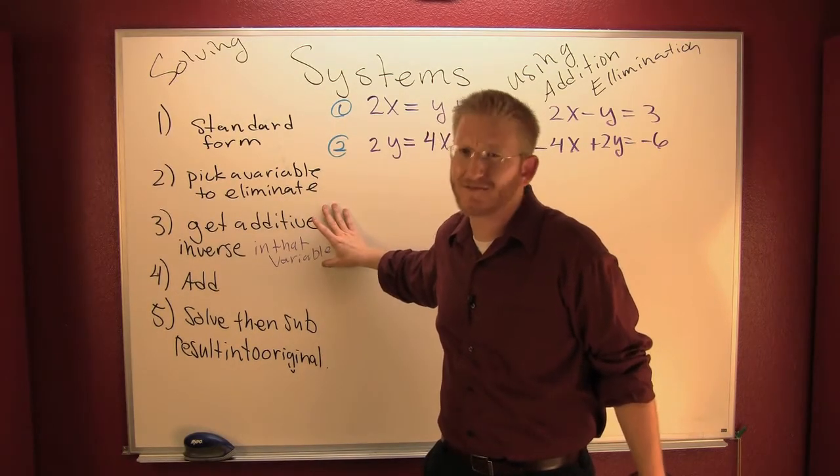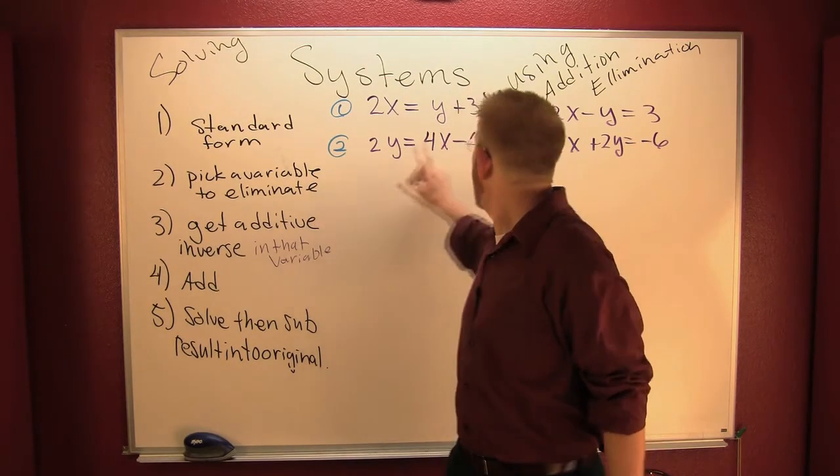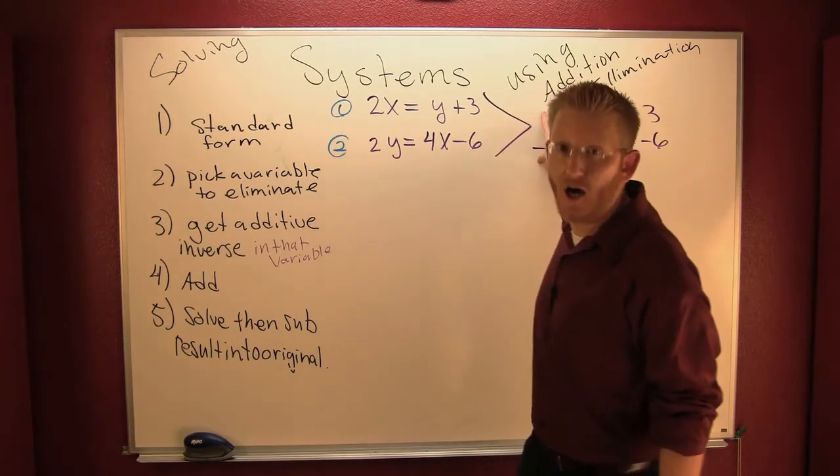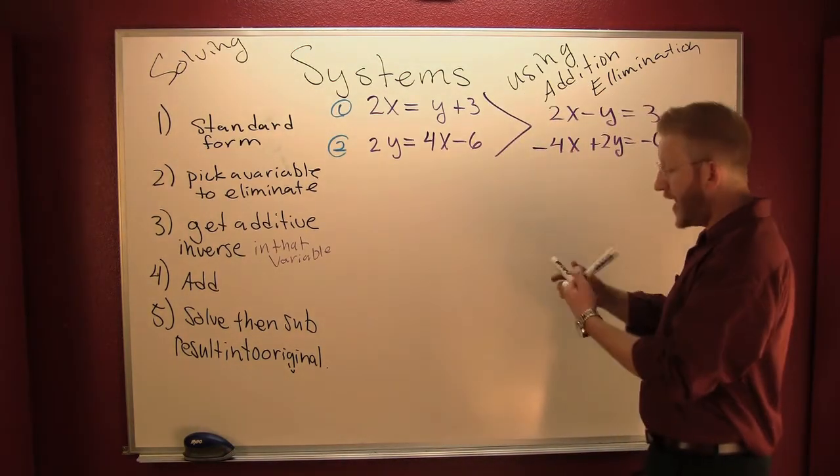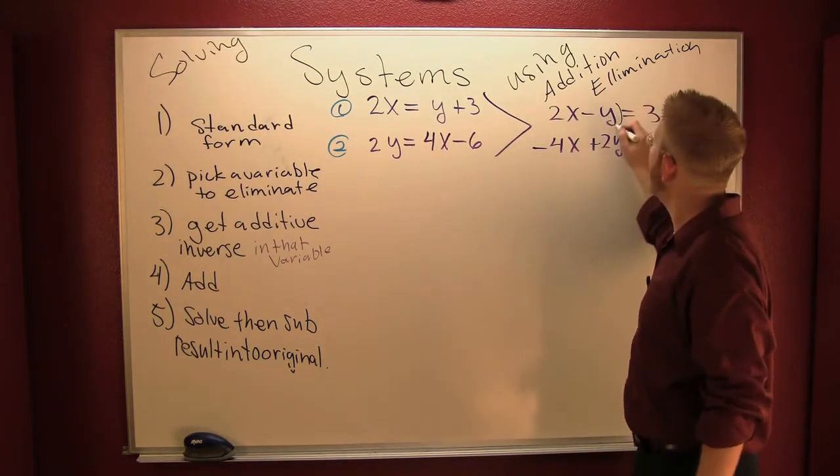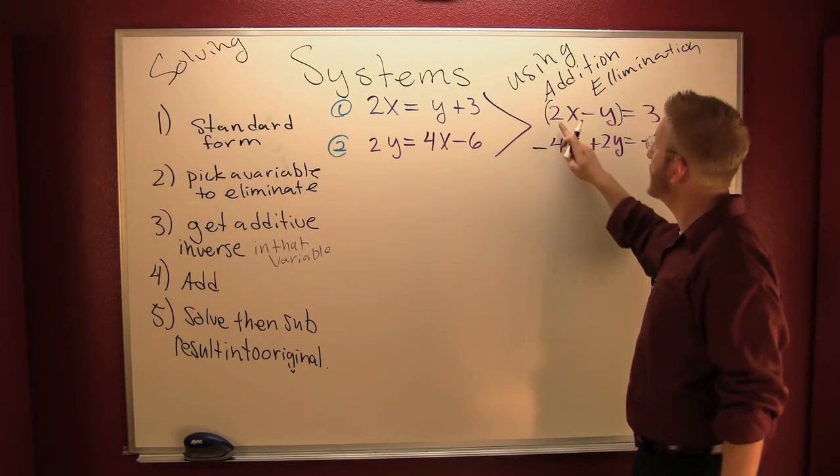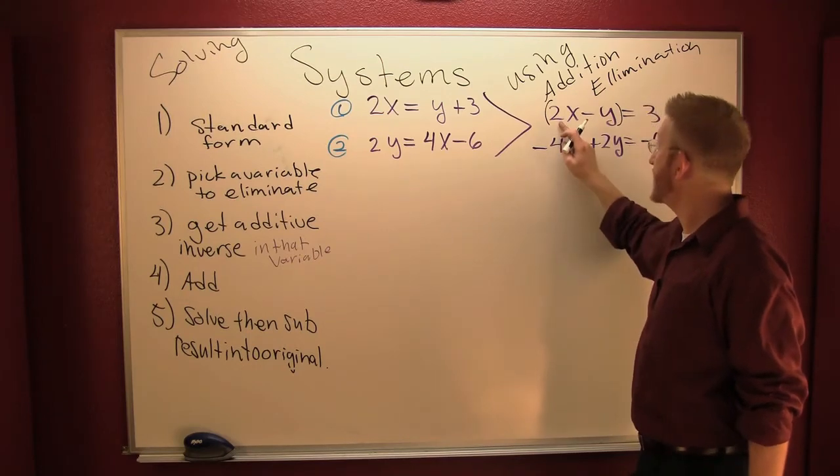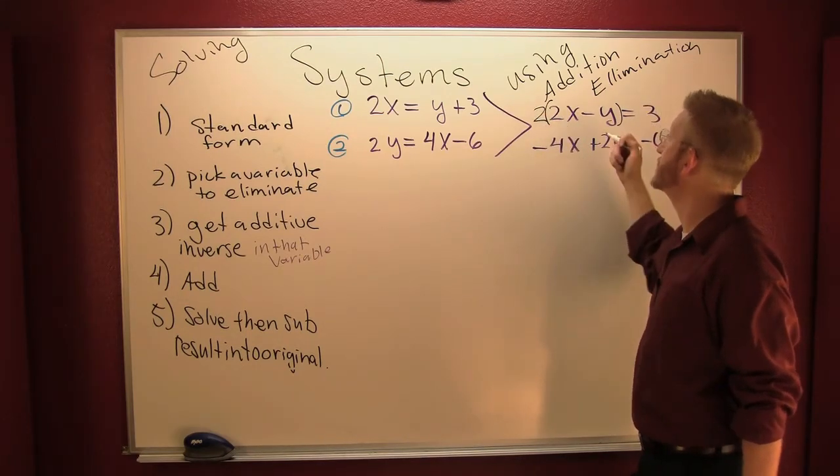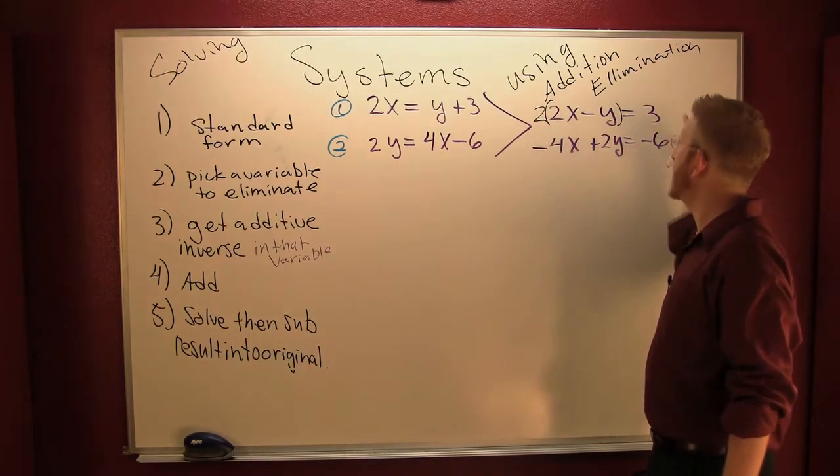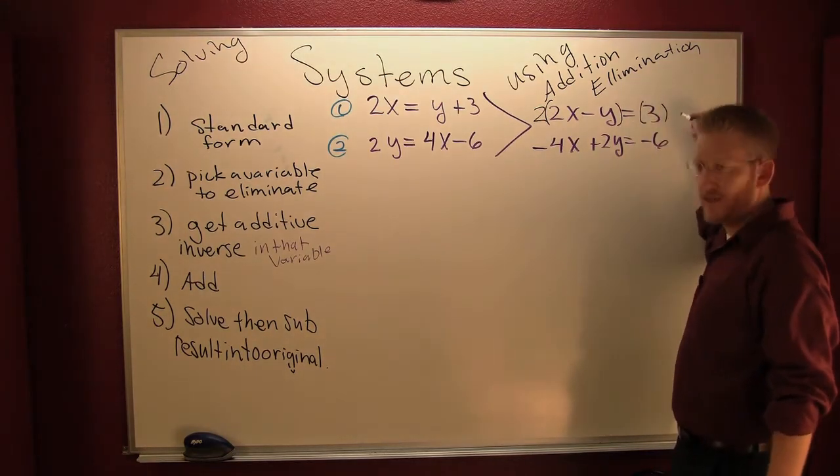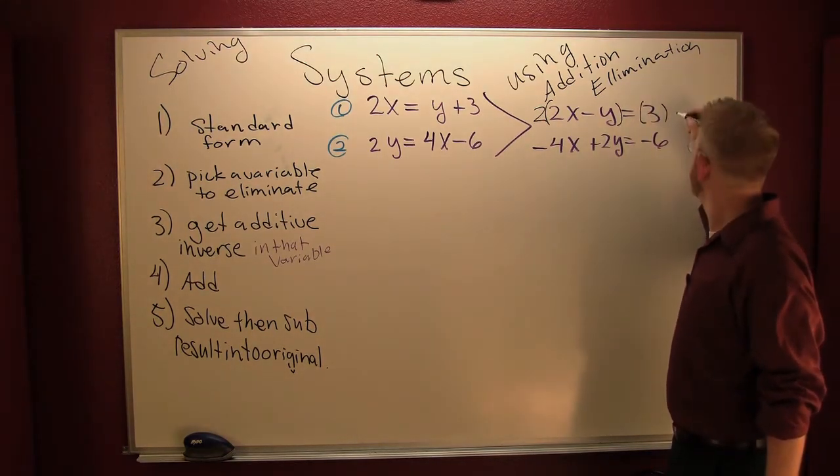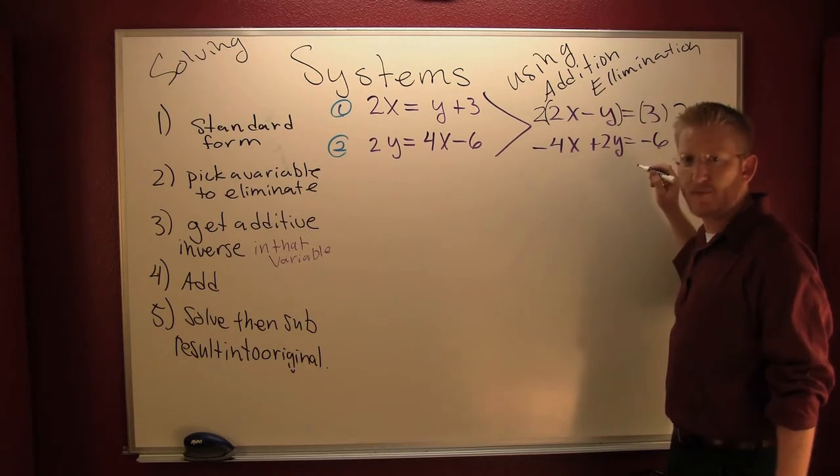Now I need to get additive inverses. What does that mean? I need to get these to have the opposite coefficients. I need to multiply one equation by something. What am I going to multiply 2 by to get 4? 4 is opposite -4. I'm going to multiply the top one by 2. But what you do on one side you must also do on the other. It maintains your equality, so I'm going to multiply that side by 2.